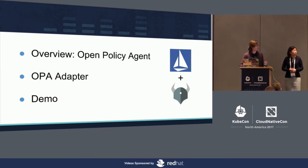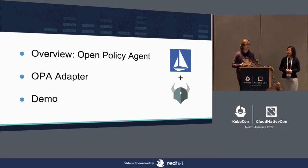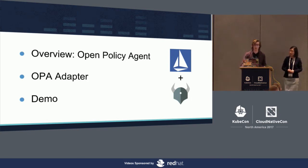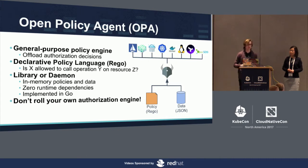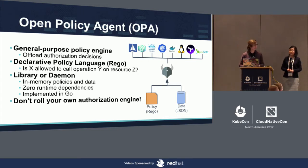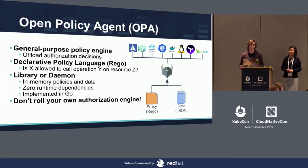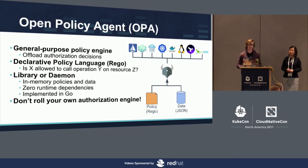I'm going to give everybody a quick overview of what the Open Policy Agent is, how we built the adapter, and then show how you actually use it. The Open Policy Agent is an open source general purpose policy engine. You can use it in basically any system, at any layer of the stack to offload policy decisions. One obvious application for OPA is API authorization, because pretty much every organization needs to control who can do what across their microservice APIs.